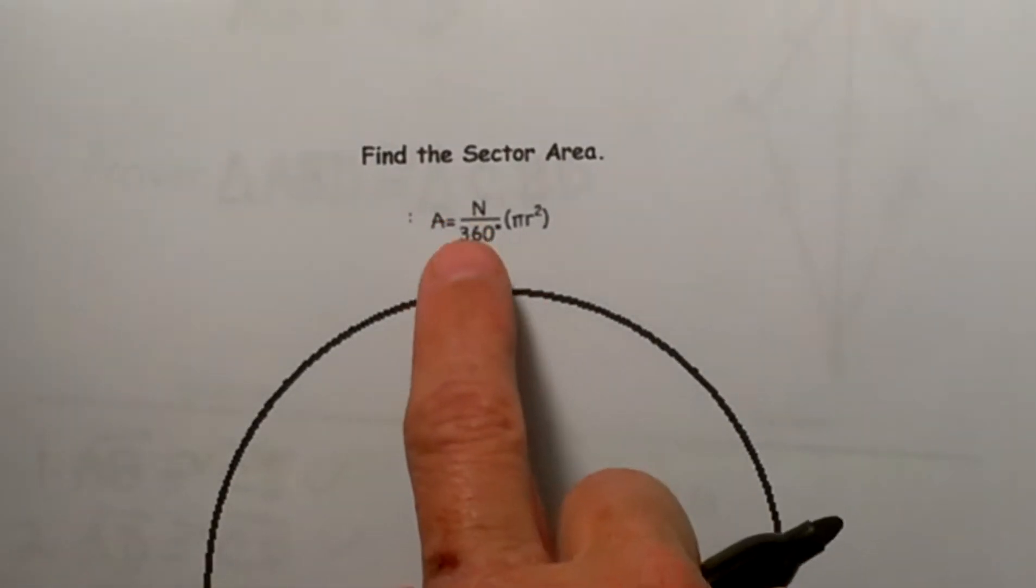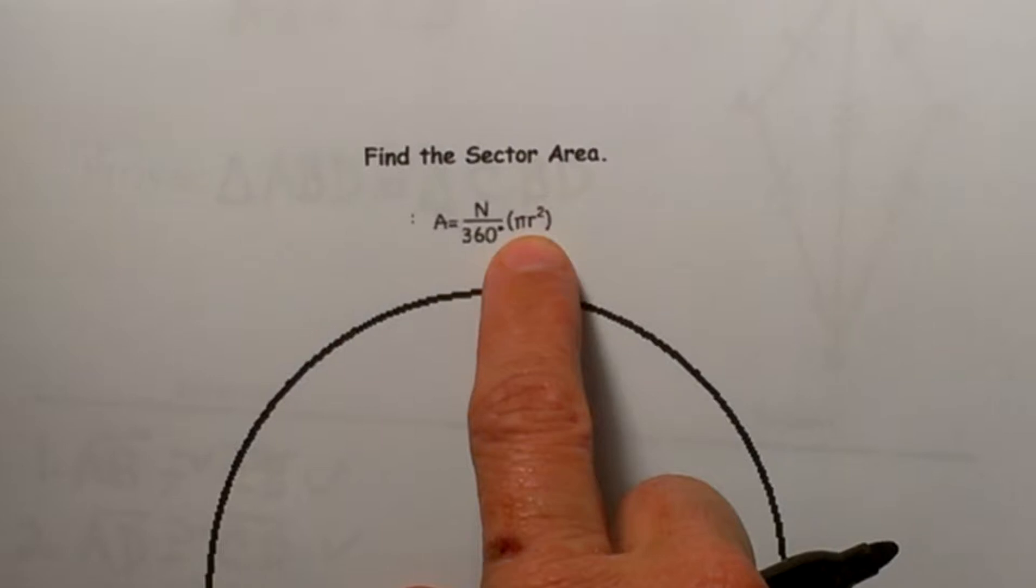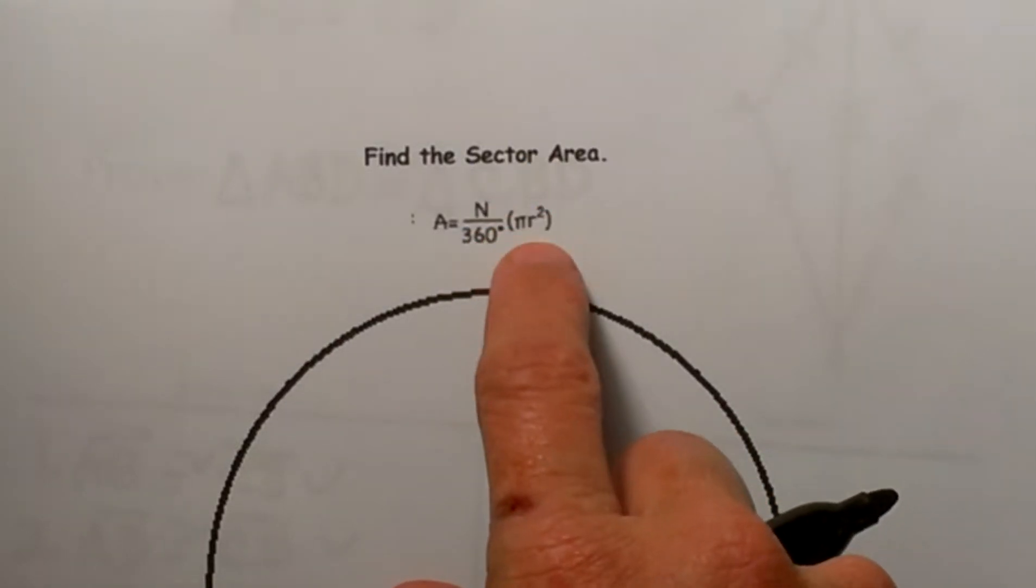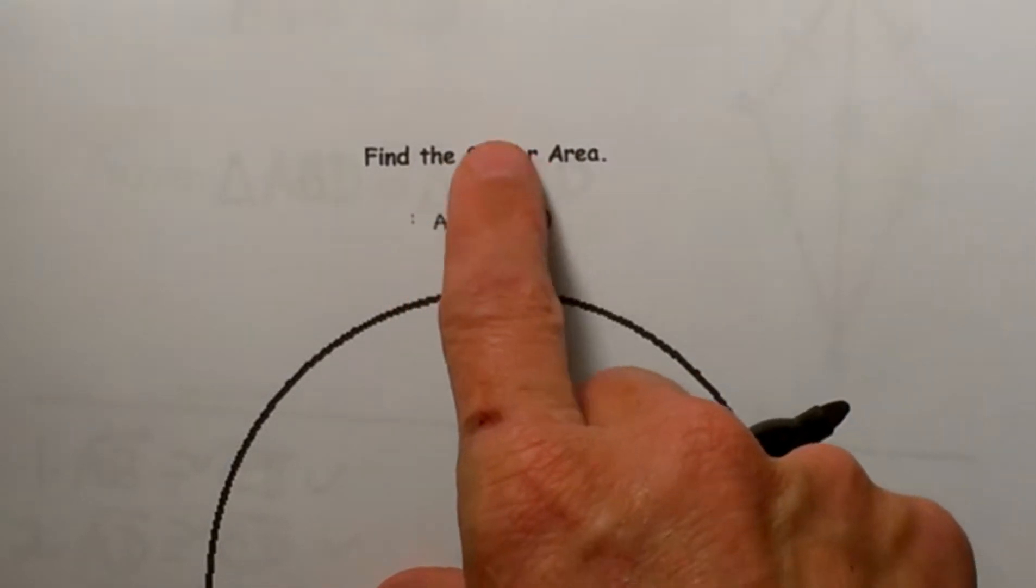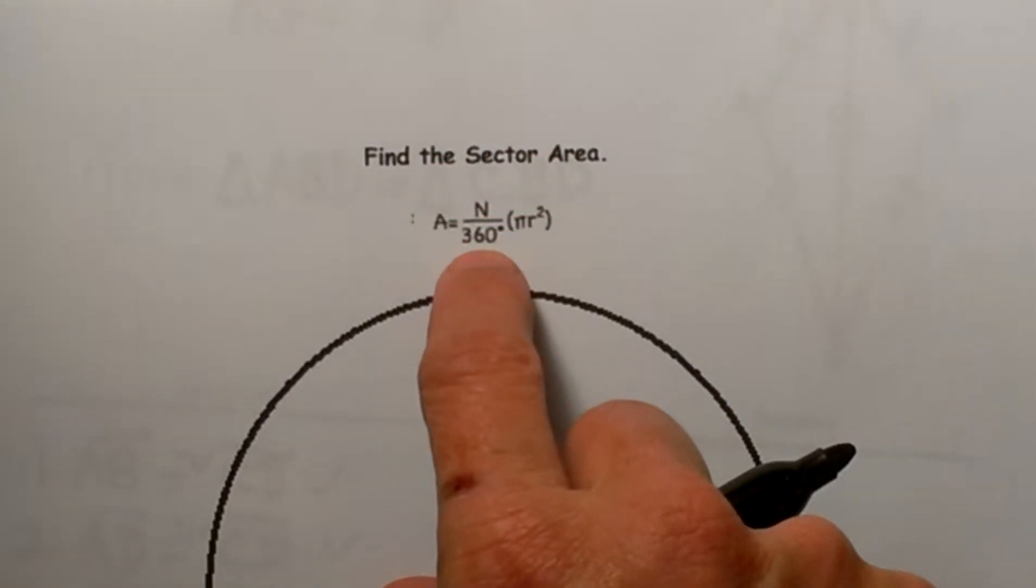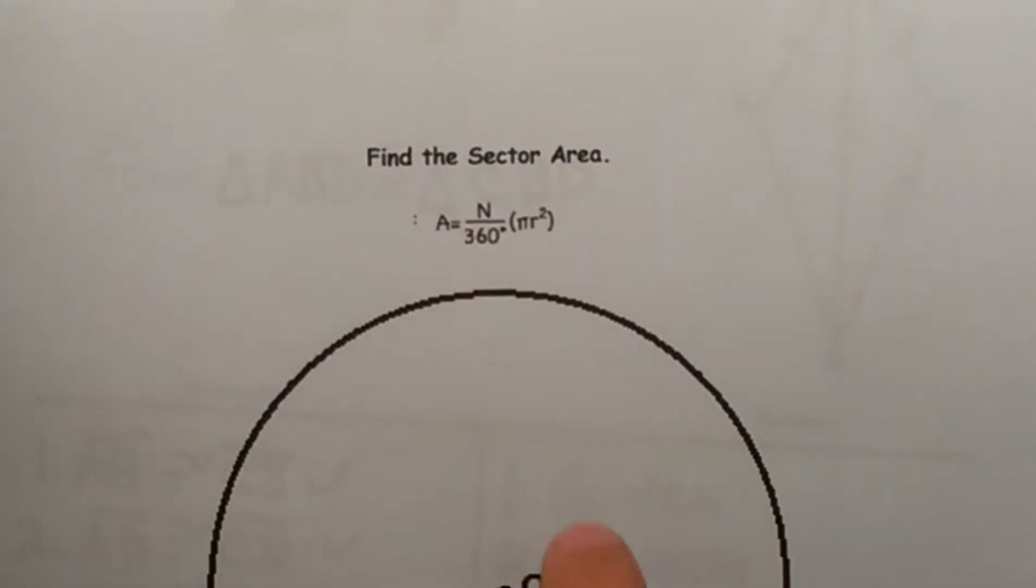Now it is a fairly simple equation. You have your pi r squared in there for the area of the whole circle, and then n over 360 just gives you the fraction of the circle that you are dealing with. So n is our degree measure of the sector.